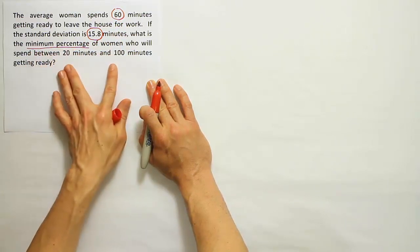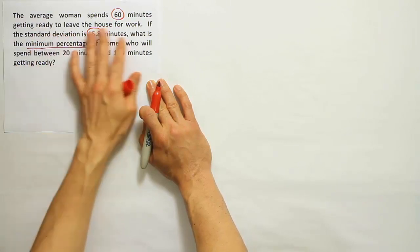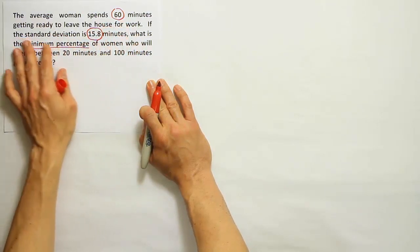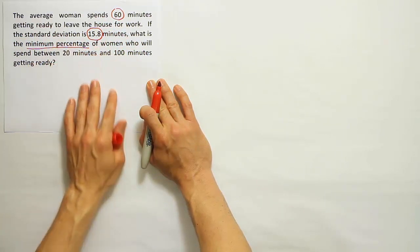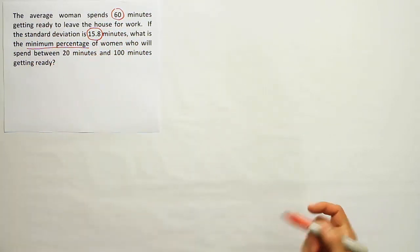Asking for the minimum percentage within an interval, perfect. It doesn't talk about the data being bell-shaped in any way or normally distributed or symmetric and mound-shaped. So at that point, I think this problem is probably involving Chebyshev's theorem.